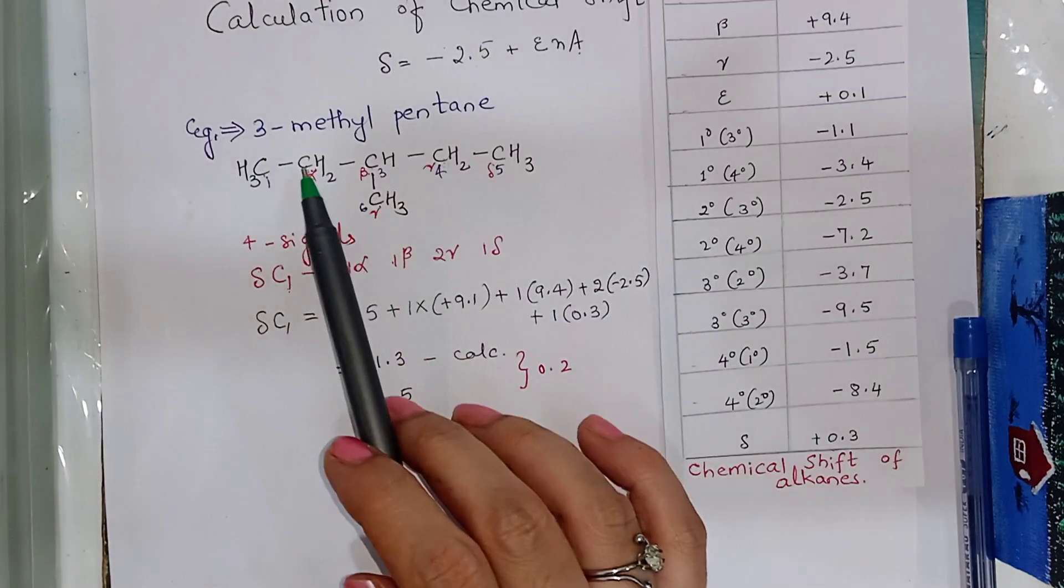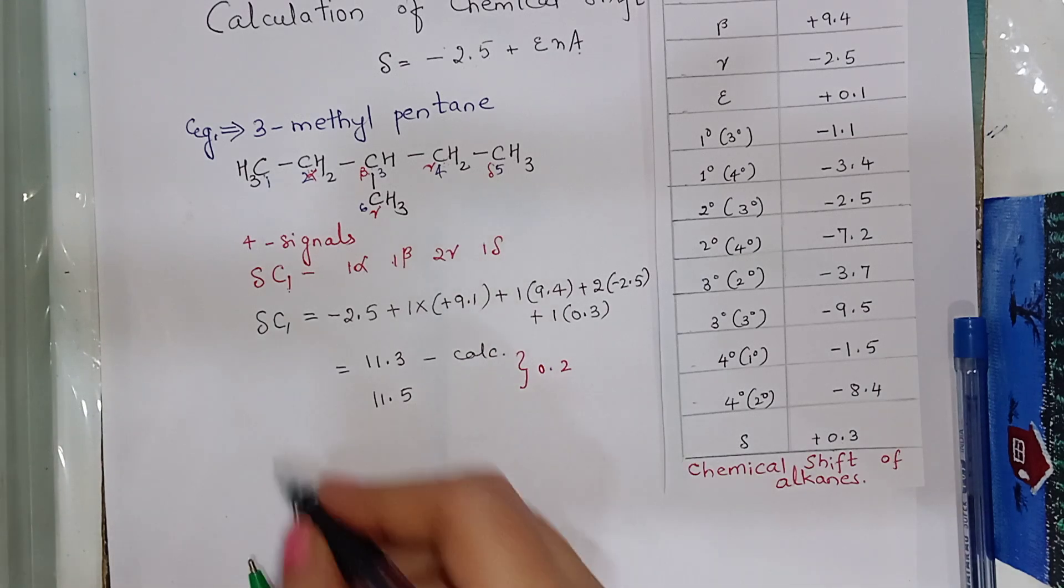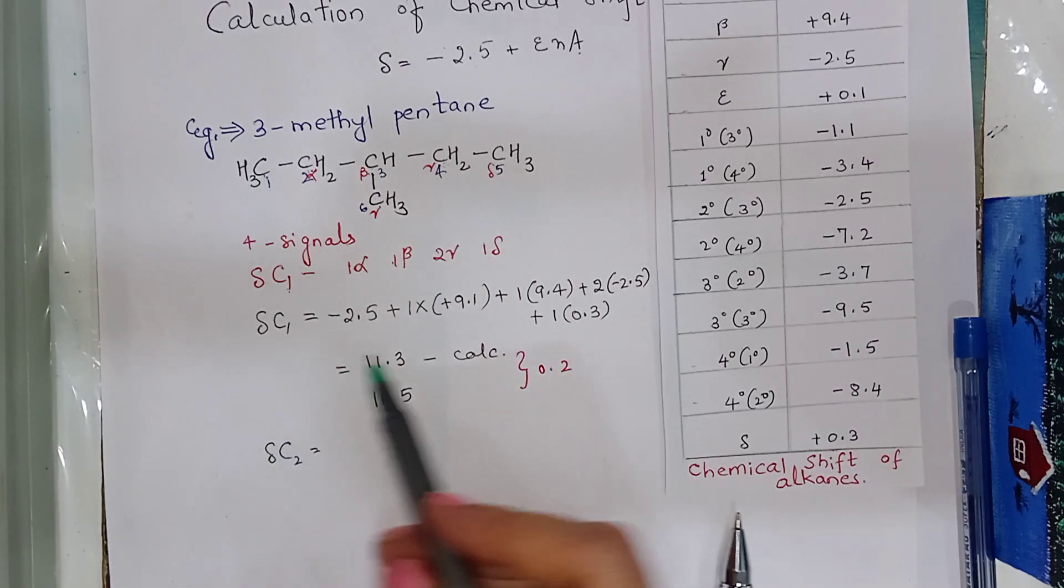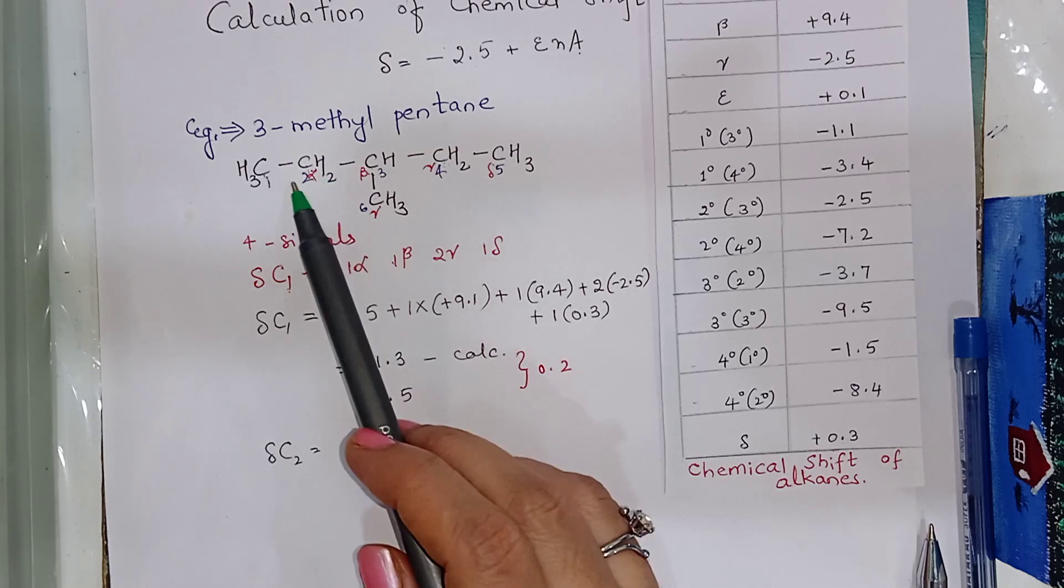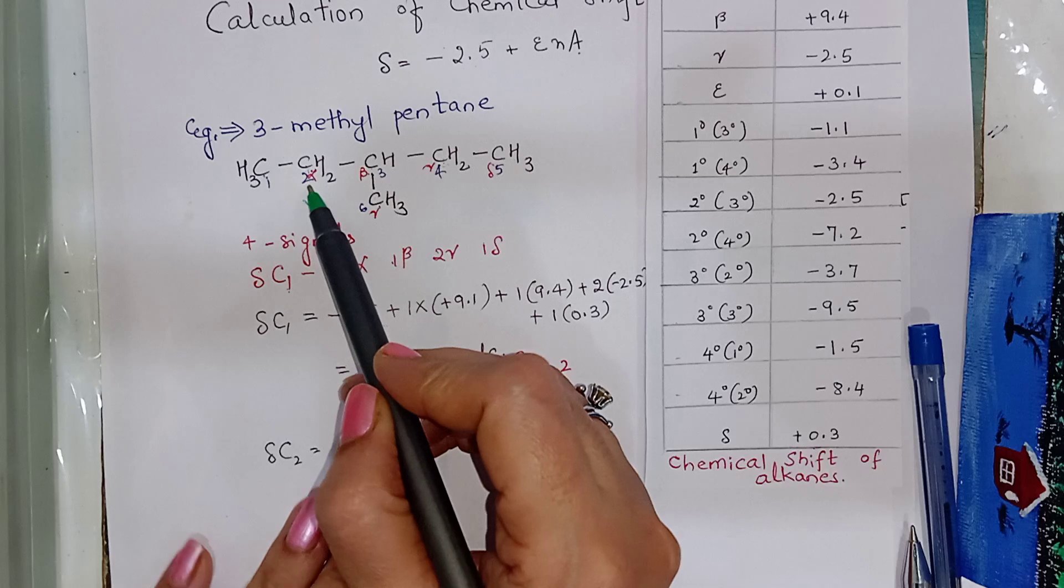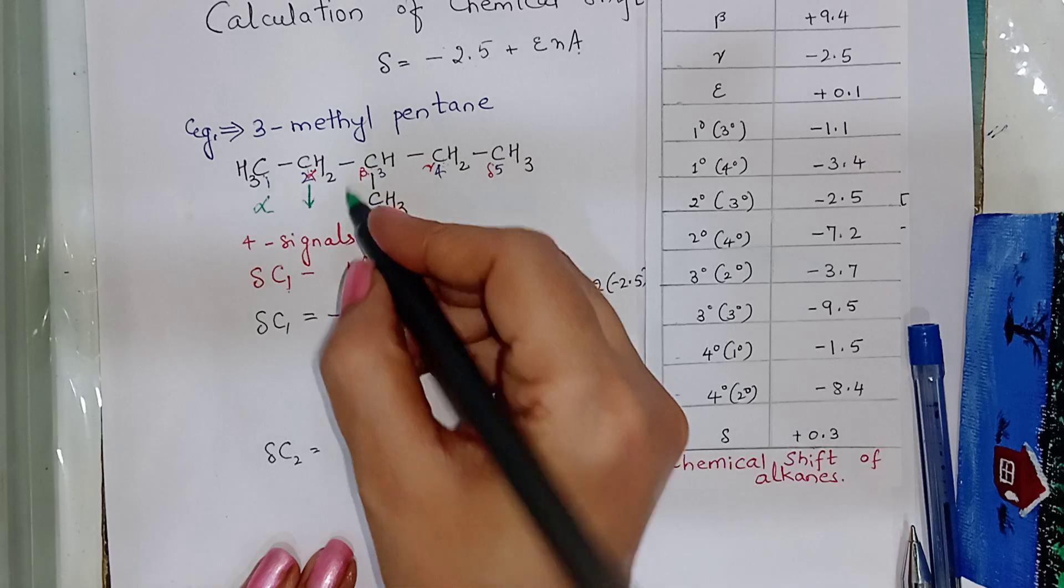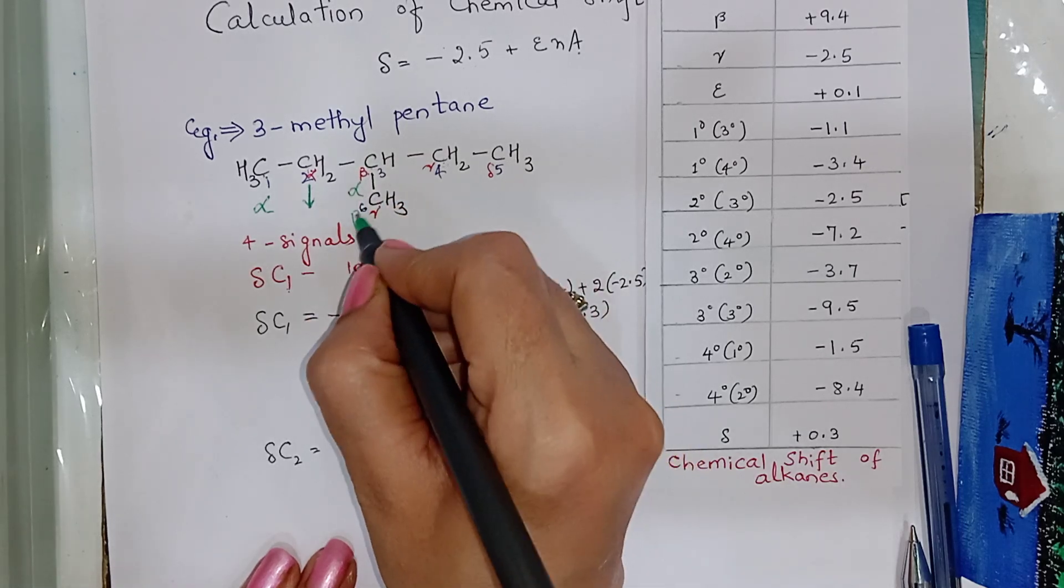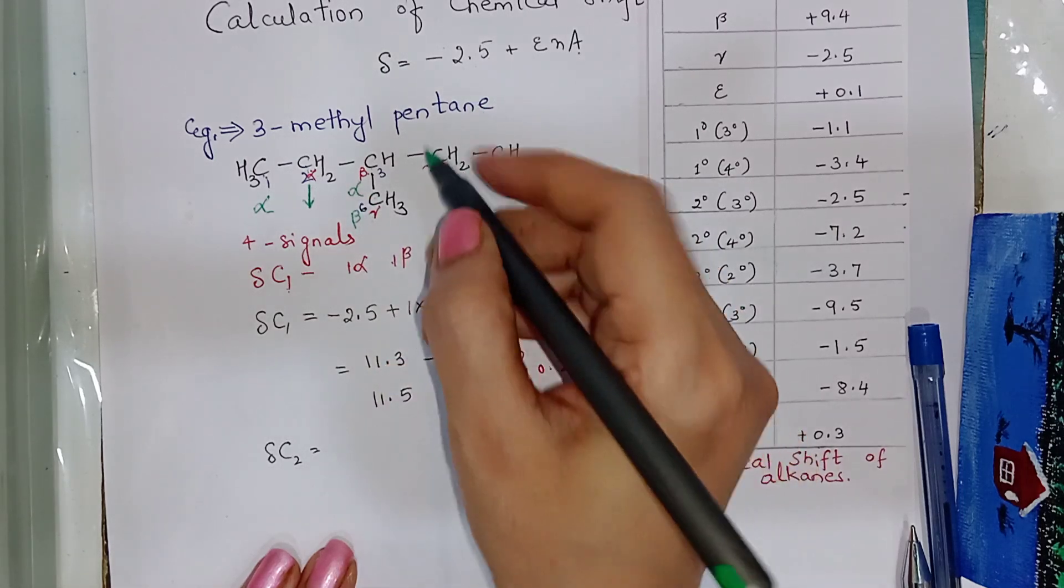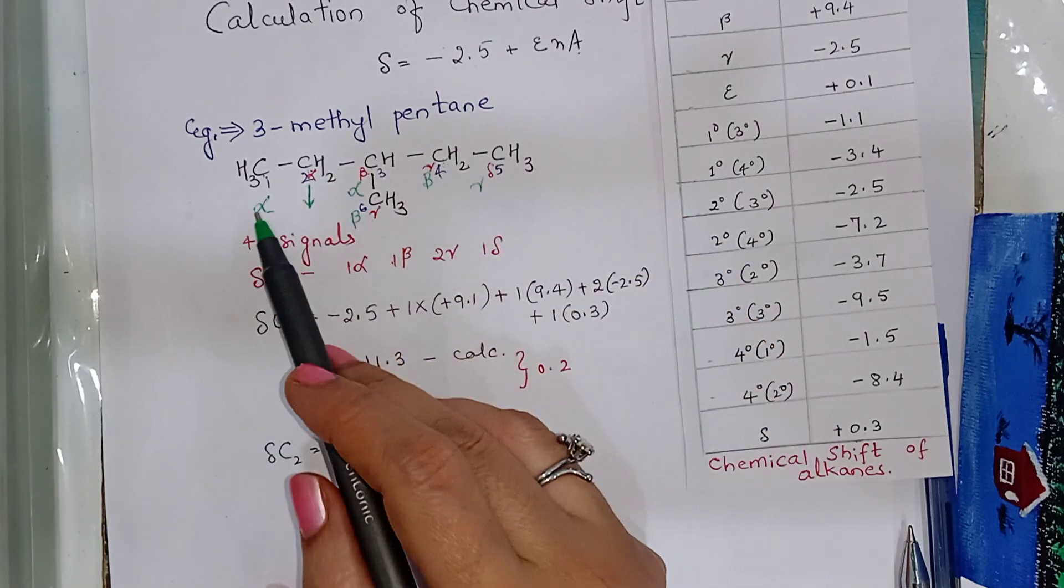Now, let us see the chemical shift of carbon 2. C2 carbon in 3-methyl pentane has, for C2 carbon this is alpha, this is alpha, so therefore this will be beta. This is alpha, therefore this will be beta and this will be gamma. So, C2 carbon has